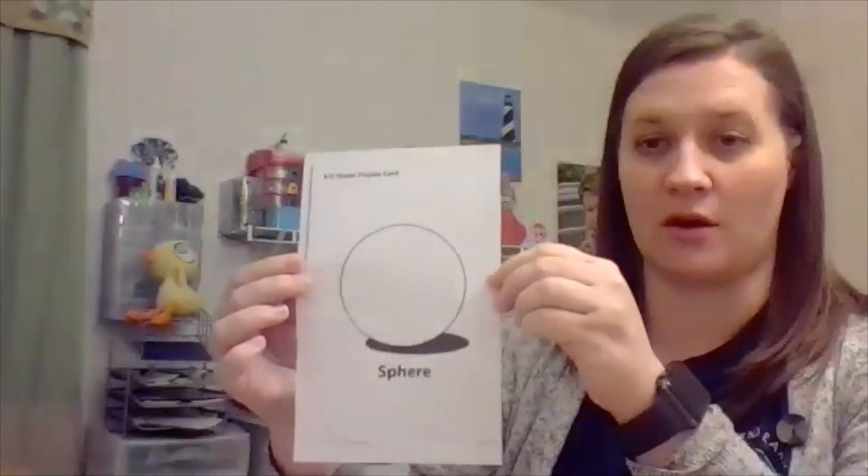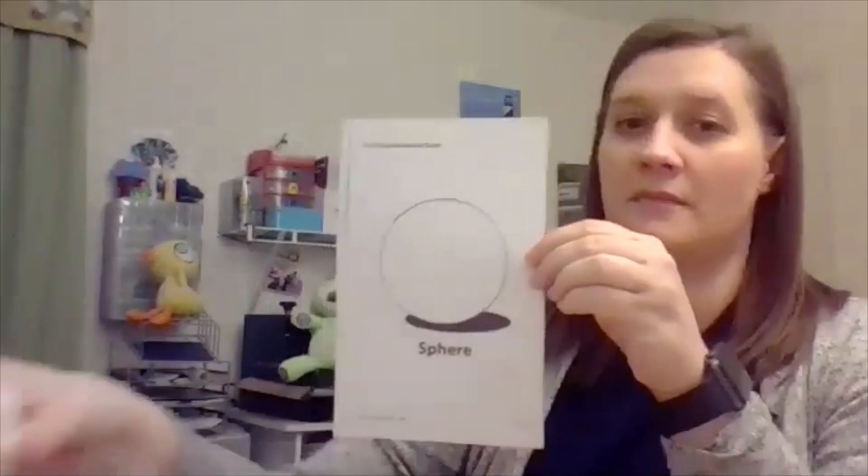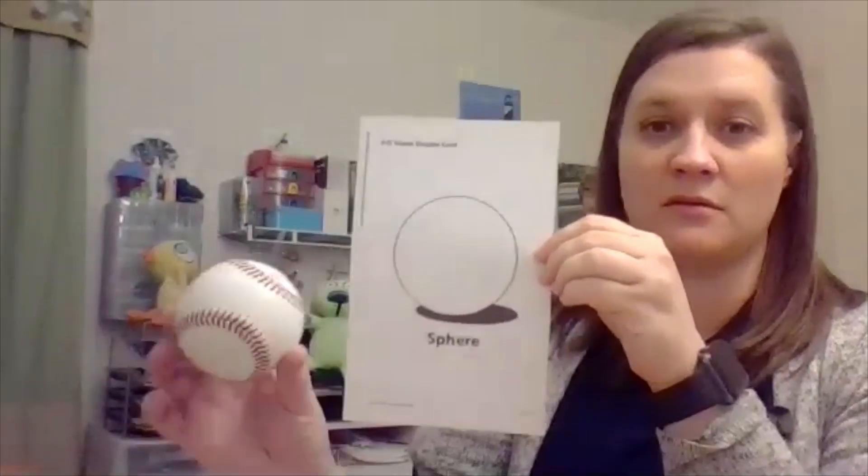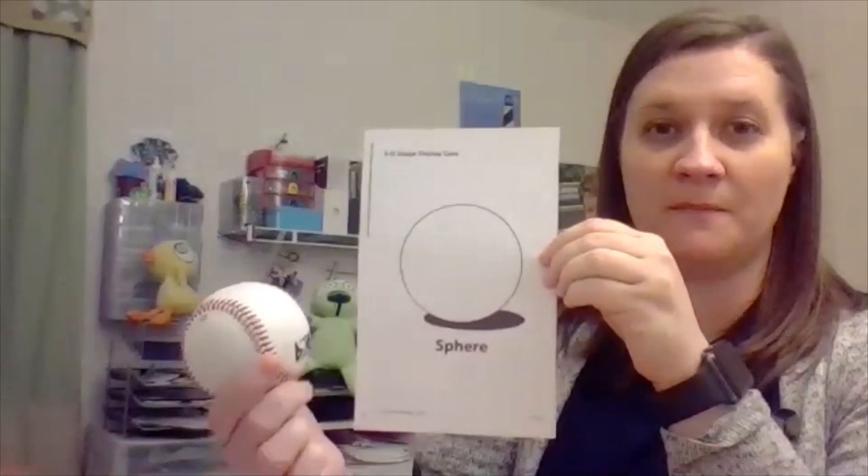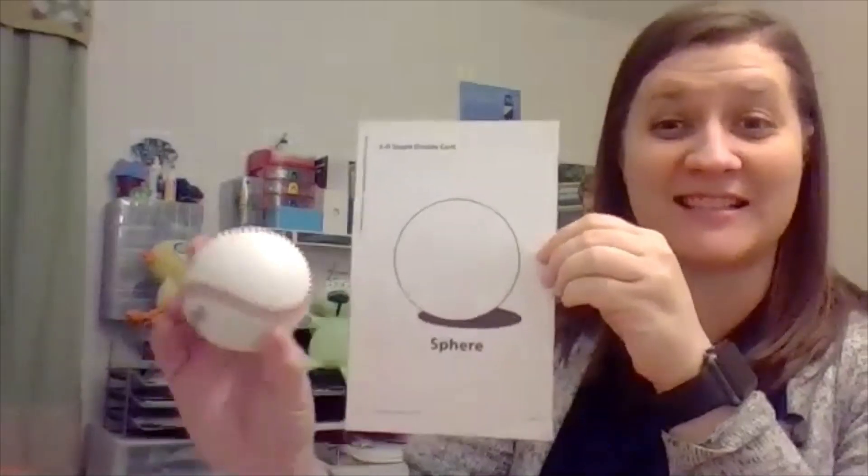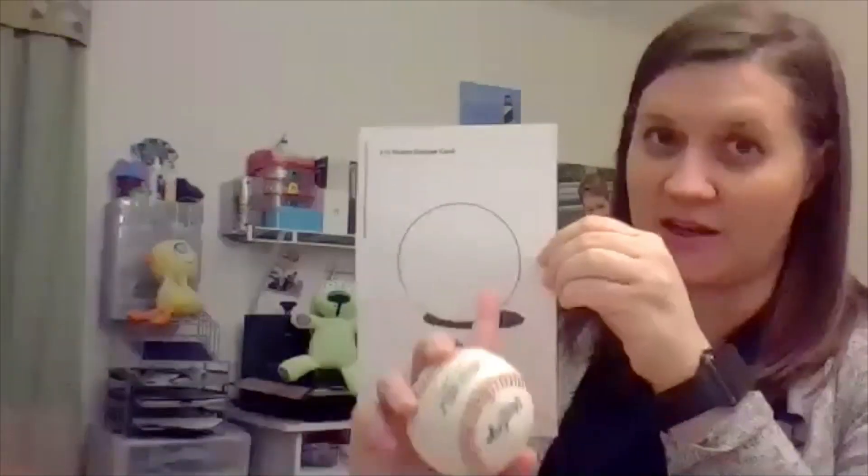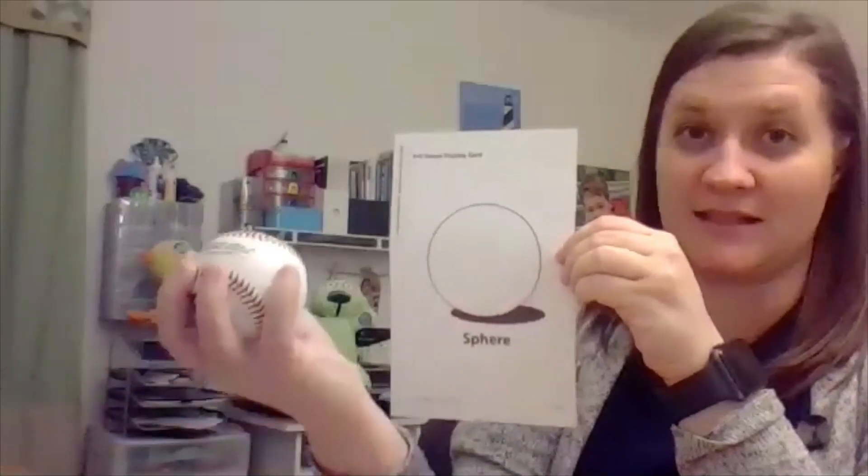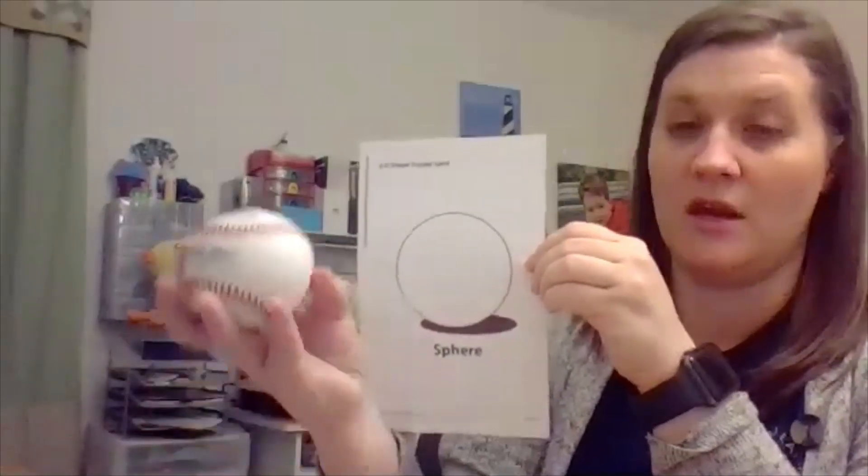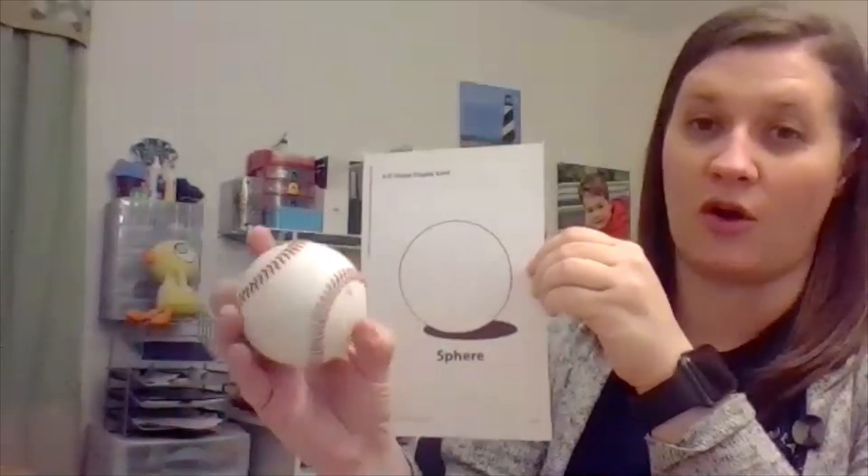So take a look at this card and this shape. Do you remember what that's called? That's right, it's a sphere. It kind of looks like a circle on the card because it's flat, but when we look at the baseball you can see that it's solid. It's three-dimensional so it's a sphere. It's all curves.